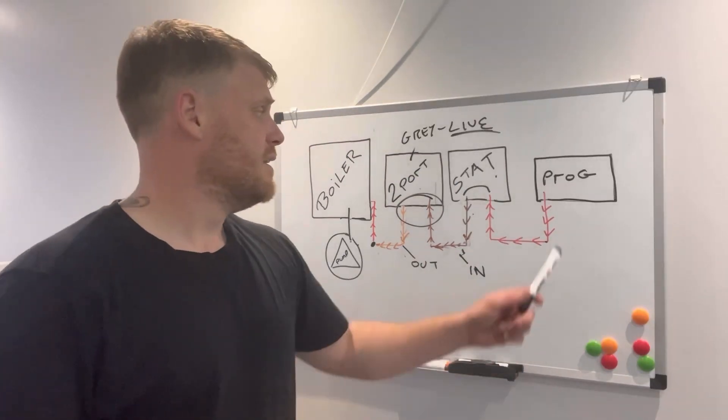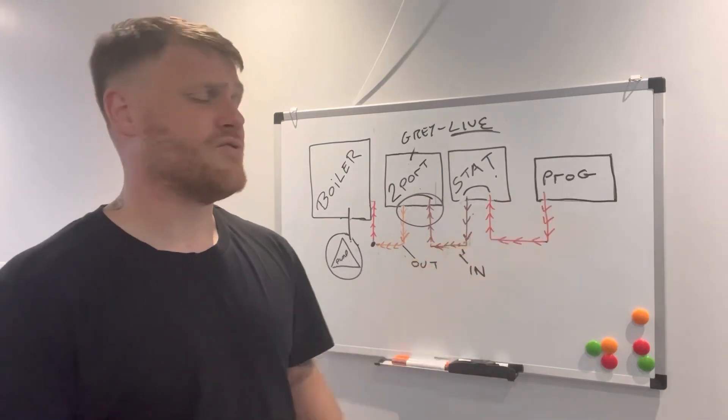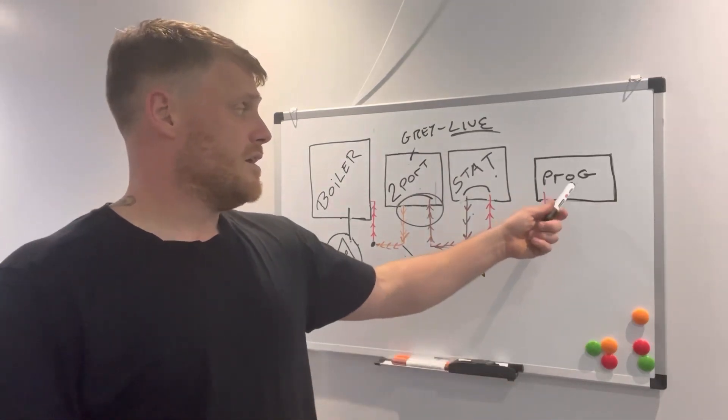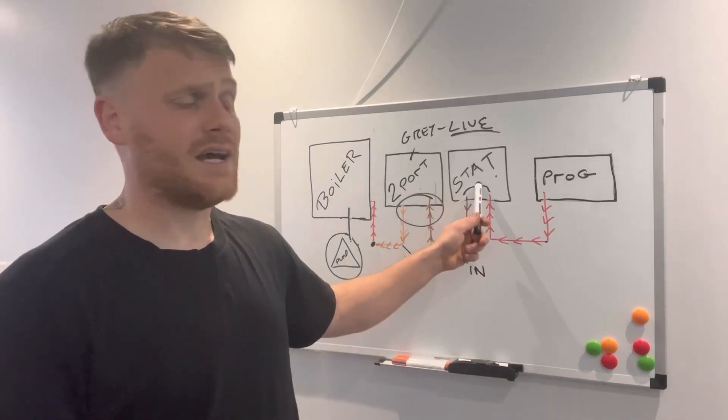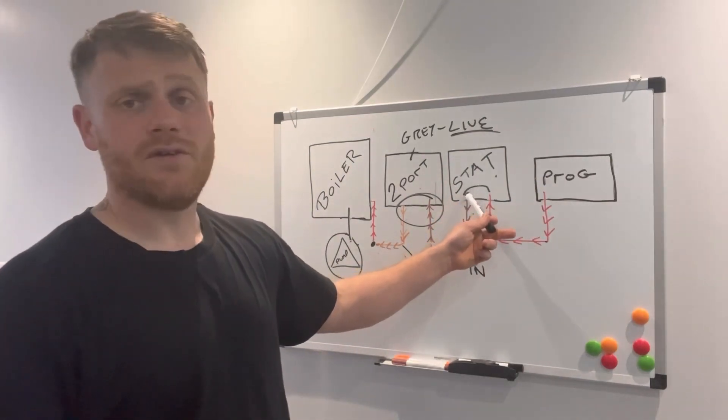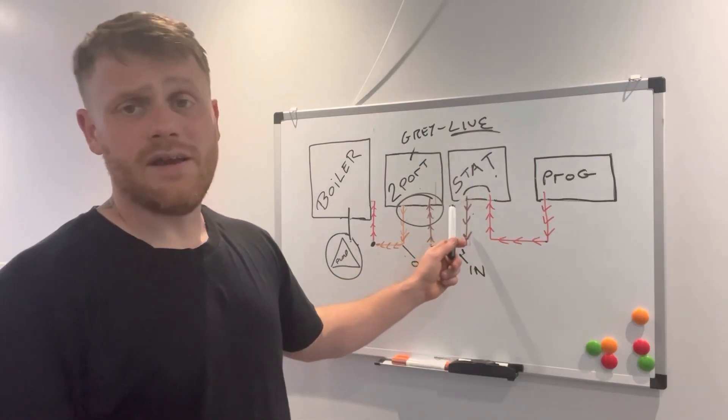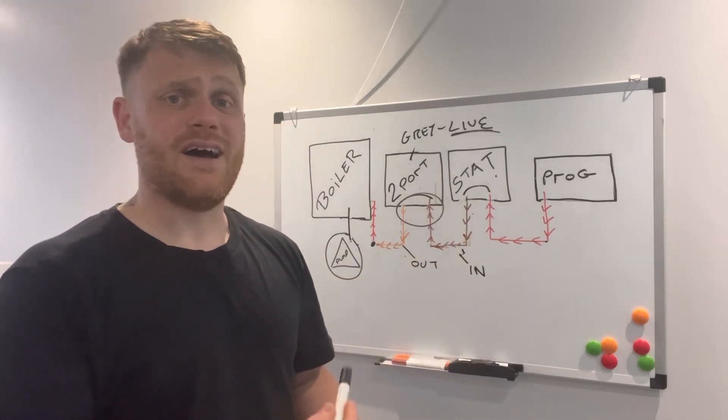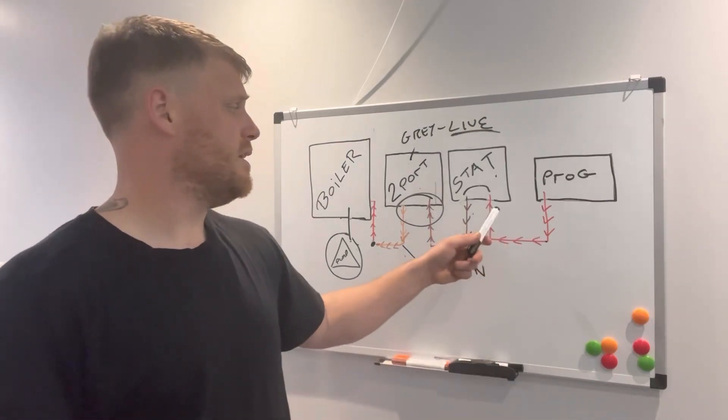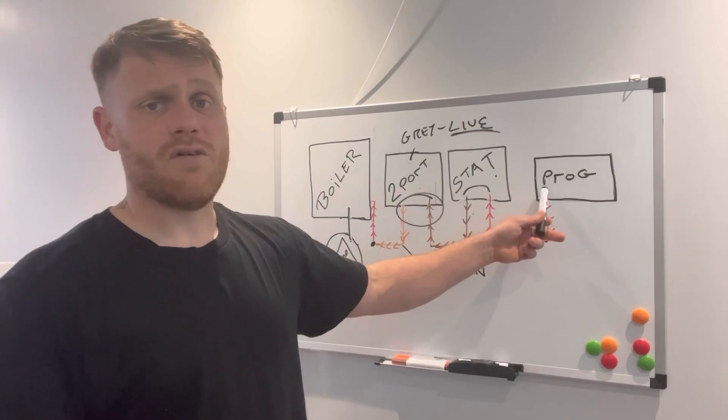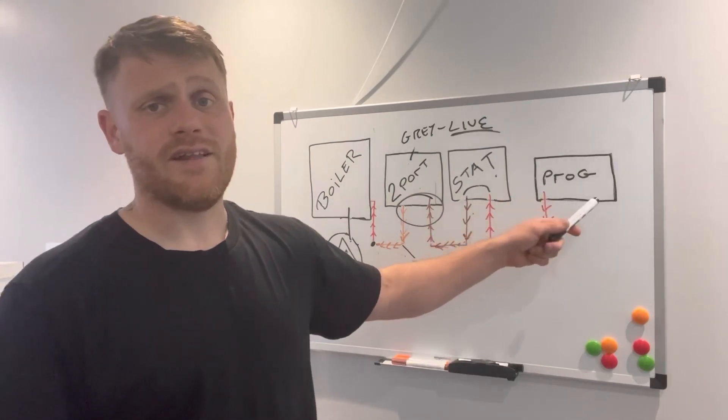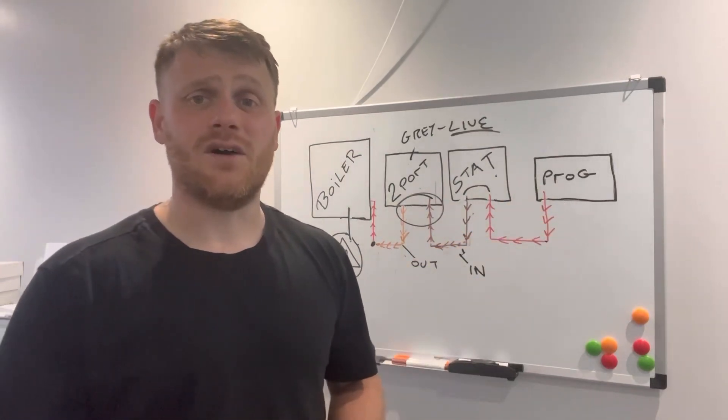And that's it, that is a simplified S-plan wiring. Just to cover the programmer and the stat, on the programmer you'll normally have, it's normally three and four on these, coming out whether it be heating or hot water. That'll be to the common on the stat, then that'll be coming out on the call on the stat. It depends on the make and model of the stat and the programmer where them wires goes, but normally it's common and call.